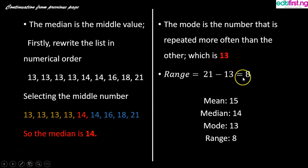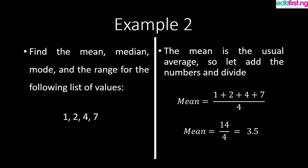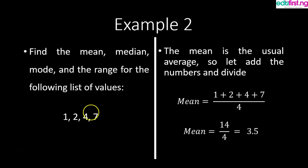In summary for example one: our mean is 15, median is 14, mode is 13. Example two: find the mean, median, mode, and range for the following values: 1, 2, 4, 7. We can see there are only four values, and the count is even.